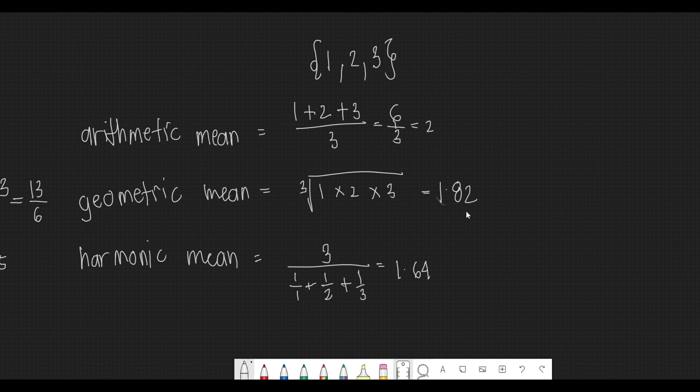Again, arithmetic mean is simply the average. So it's 1 plus 2 plus 3 divided by 3.